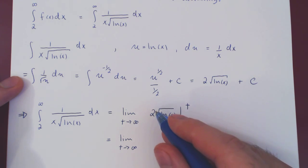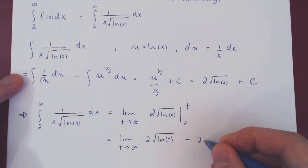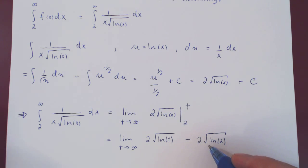So we have 2 root of ln of t minus 2 root of ln of 2. But, as t goes to infinity, ln of t goes to infinity, the root of infinity is infinity. So this term blows up to positive infinity, minus a real number, doesn't matter. The whole thing blows up to positive infinity.